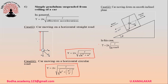Car moving down on a smooth inclined plane. The time period of the simple pendulum in this case is given as T = 2π√(l/(g cosθ)), where θ is the angle of inclination of the inclined plane.